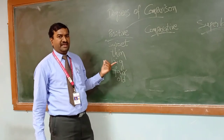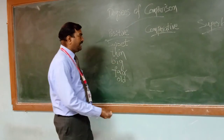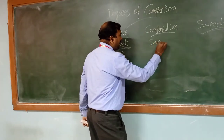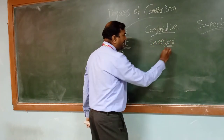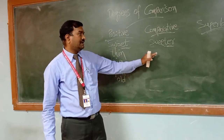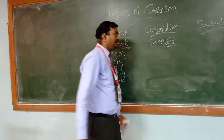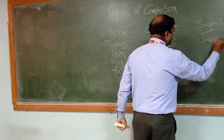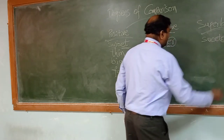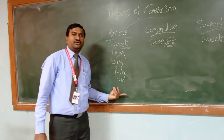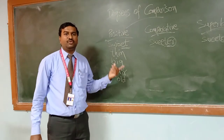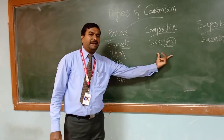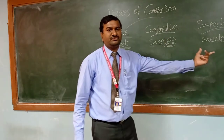Now let us see how we can change adjectives from one degree to another. All the adjectives taken here are monosyllabic words — words having only one syllable. When an adjective ends with a consonant, we add ER in comparative degree and EST in superlative degree. For example, 'sweet' becomes 'sweeter' in comparative and 'sweetest' in superlative.